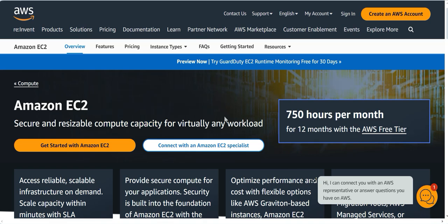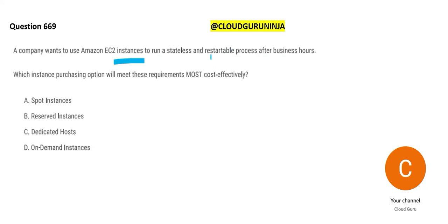The next question is about EC2 instances. EC2 is a compute solution. The scenario says: I can afford a restartable application — if it goes down, I can restart it after a couple of hours, no problem. Students are like that because they have very little money and want the most cost-effective solution. So which instance type is it? Reserved instances cannot be cost-effective — anything reserved or dedicated cannot be cost-effective.